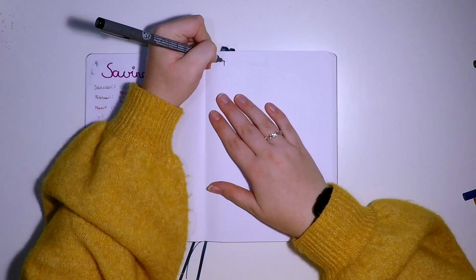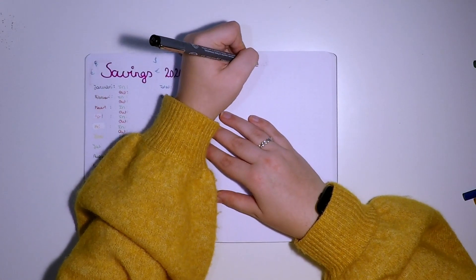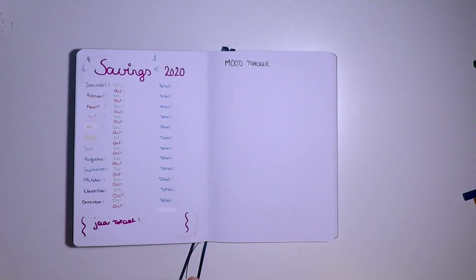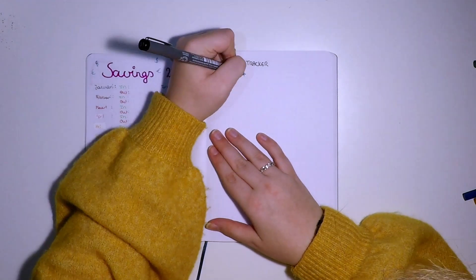And then I made the thing that you see in every single bullet journal, but which is very helpful for me, and that's a mood tracker. I think those are very helpful because you can actually get a sense of how your month is going overall.